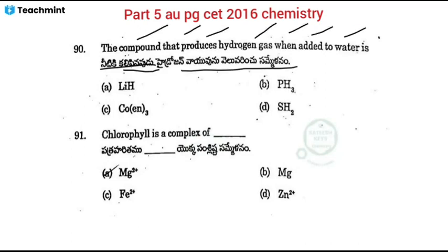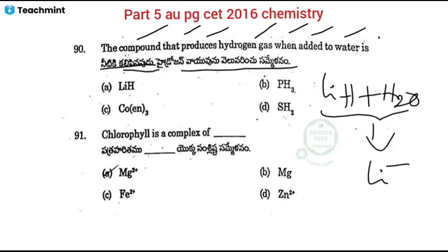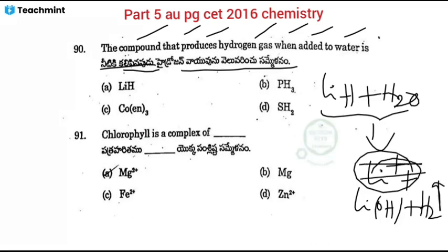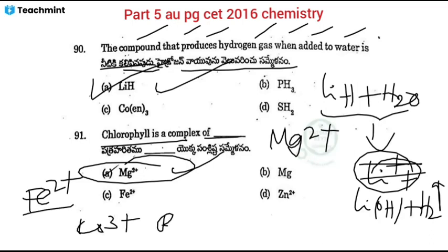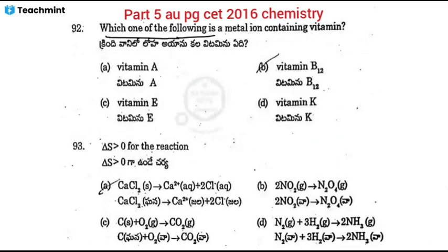Next question: which compound produces hydrogen gas when added to water? The compound is highly reactive. When it reacts with water, H₂ is produced. Option H is the correct answer. When Mg₂O (also called NMg₂O) reacts with water, H₂ is also produced.